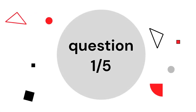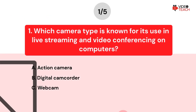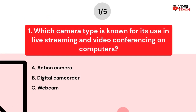Question number one. Which camera type is known for its use in live streaming and video conferencing on computers? Option A: Action Camera. Option B: Digital Camcorder. Option C: Webcam.